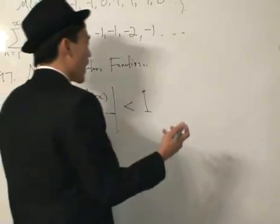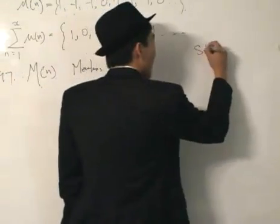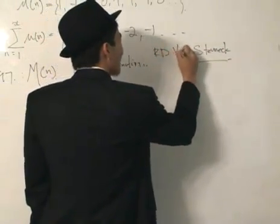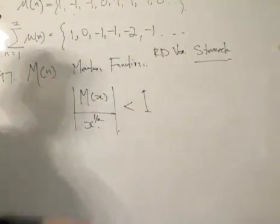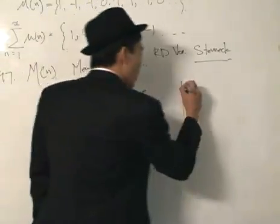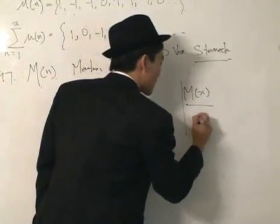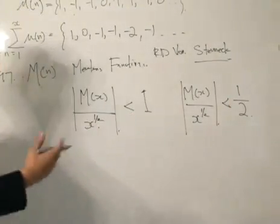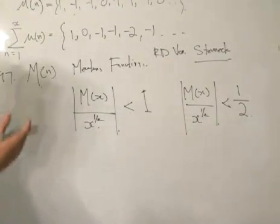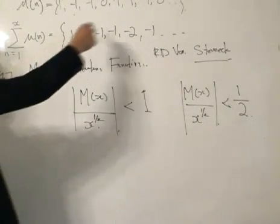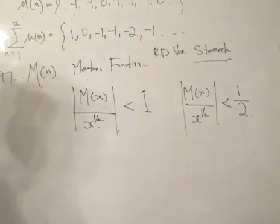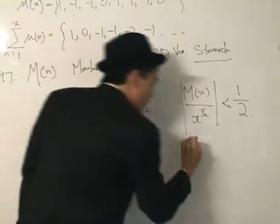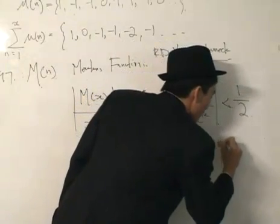In the same year, there was another guy called R.D. von Sterneck. He made another conjecture, similar to this, but he would write that the modulus of the Mertens' function divided by x to the power of half is less than half. He spent days and days assiduously calculating up to values of 5 million, and then he realized it's actually less than half after the first 200 values.